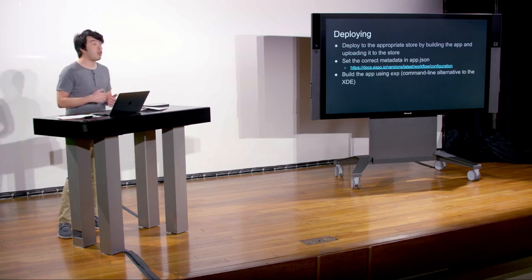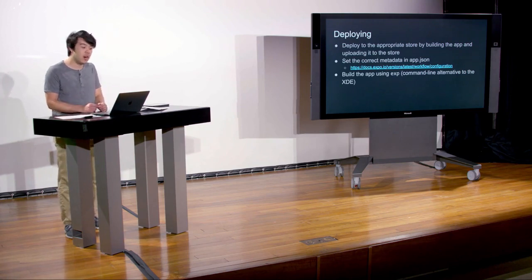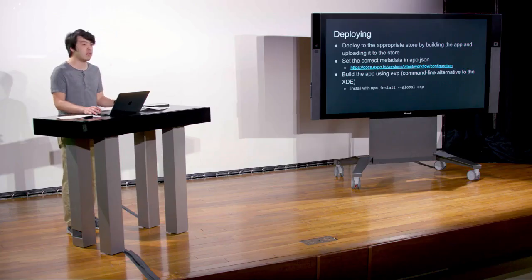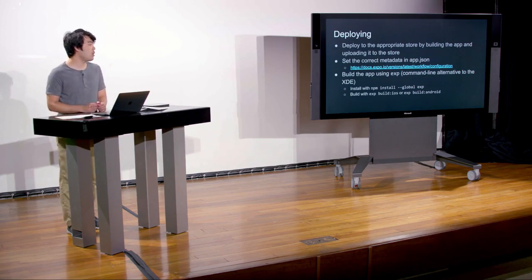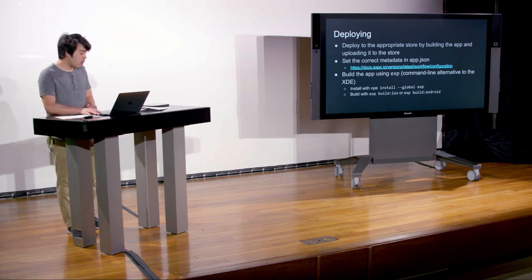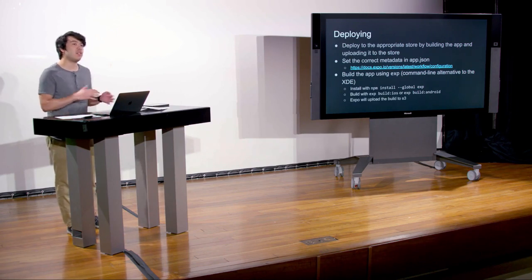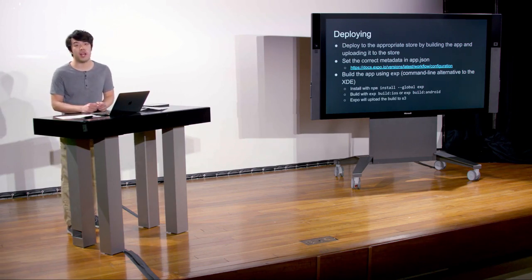Then you build the app using a command-line utility called exp — basically an alternative to the XDE, since the XDE doesn't allow you to build within that GUI. Install it with npm install -g exp, then build by running either exp build:ios or exp build:android. What that does is send your entire JavaScript bundle over to Expo servers, where the entire build happens, and then Expo uploads that build to S3.